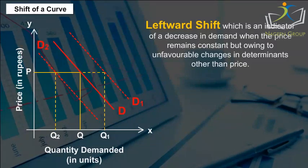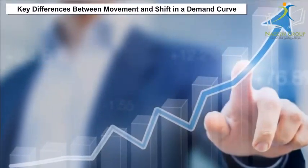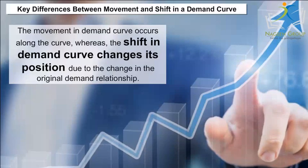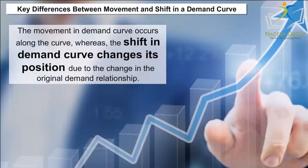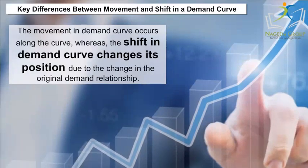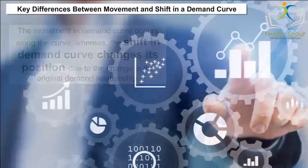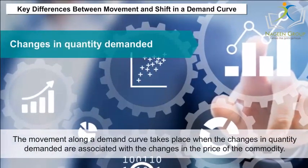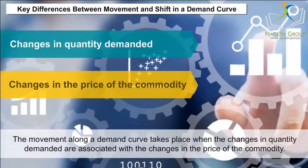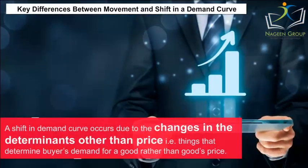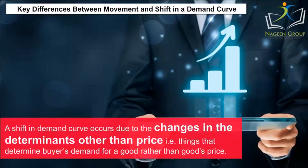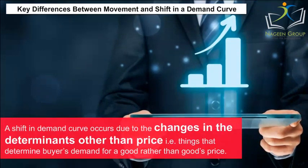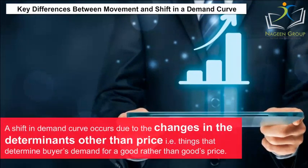Key differences between movement and shift in a demand curve: The movement in demand curve occurs along the curve, whereas the shift in demand curve changes its position due to the change in the original demand relationship. The movement along a demand curve takes place when changes in quantity demanded are associated with changes in the price of the commodity. But a shift in demand curve occurs due to changes in determinants other than price, i.e., things that determine buyers' demand for a good rather than the good's price.